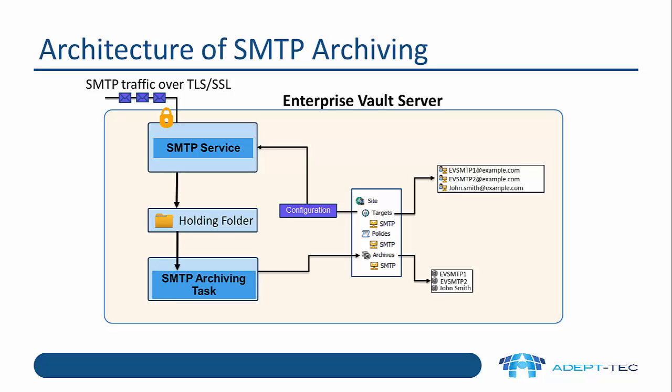When SMTP archiving is switched on, we get an SMTP service on the Enterprise Vault server which is listening on a standard TCP port such as TCP port 25. The SMTP traffic coming from, for instance, our Exchange server — i.e. our journaled emails — will be received by the SMTP service. Emails are then placed in a holding folder, organized into folders based on date and time, as email files.